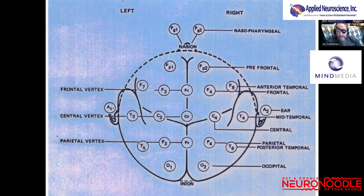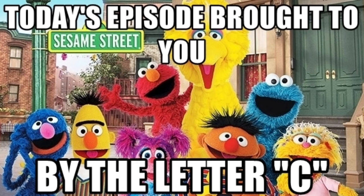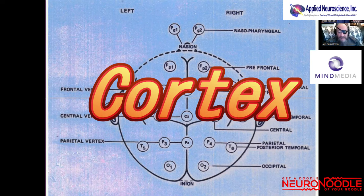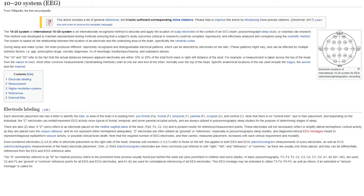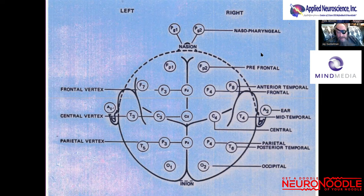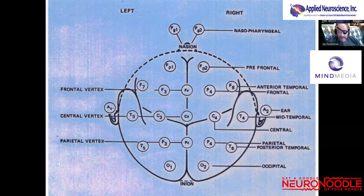So Jay Gunkelman, here we are going through the alphabet of neurofeedback — we're on the letter C. We're going to start out with something simple: cortex. The old 10-20 system was established a long time ago by Rasmussen and Benfield, 1948-49. It's not the only system — the Mayo Clinic has its own — but you need a reliable, repeatable spot to get electrodes if you're going to transfer data from one lab to the next. So the 10-20 system became the standard electrode placements.